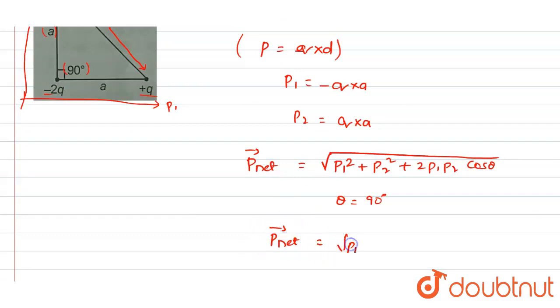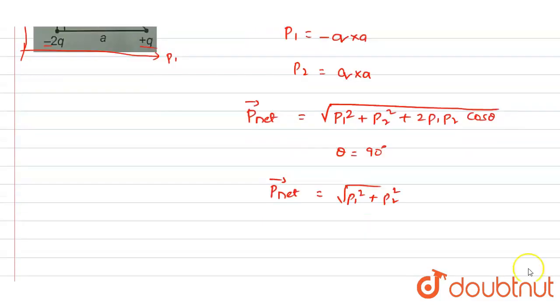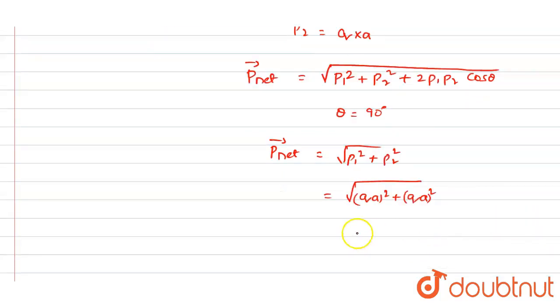So we will get the value: that will be p1, which can be written as (qa)² plus p2 value is also (qa)². If you take the qa out: qa√2.